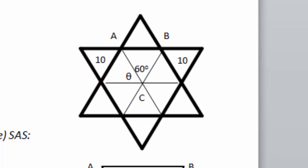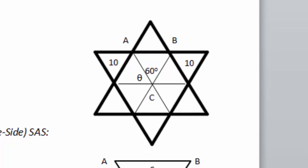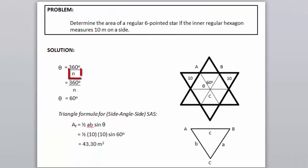The first step of the solution is to determine what is the measurement of angle theta, considering that the total inner angle of the hexagon is equal to 360 degrees, and n here is equal to 6.